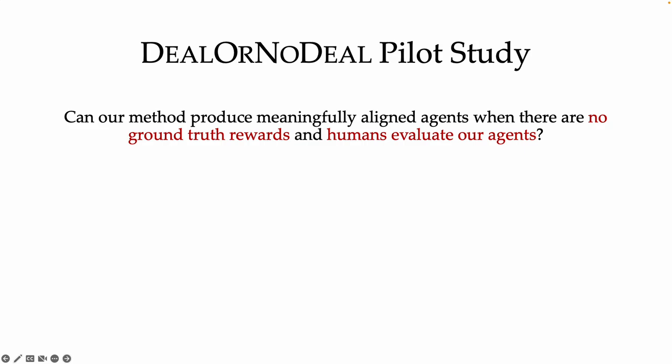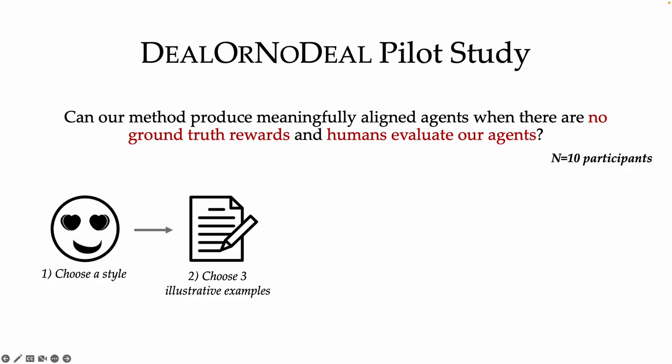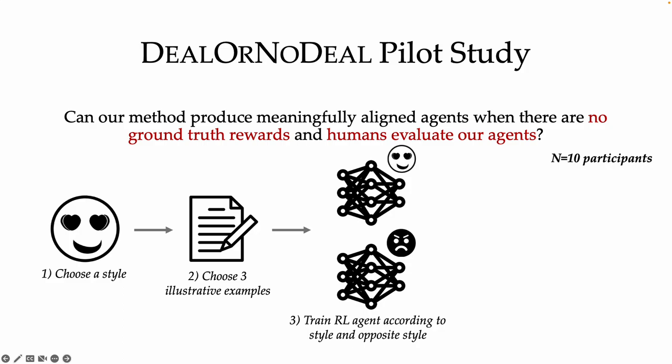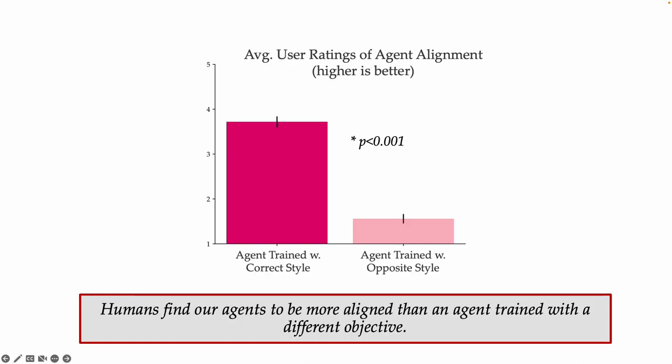Next, we ask whether we can produce meaningfully aligned agents when there are no ground truth rewards and when humans evaluate our agents. We asked 10 users to select a style in which they wanted their agent to negotiate, then select three examples of their chosen style. This is used to train an RL agent using our framework. We also trained an agent to negotiate in the opposite style by flipping the yes-no labels and user-provided explanations. We find that users rate agents trained with the correct style as significantly more aligned than agents trained with the opposite style, showing our framework can train objective-aligned agents when evaluated by humans.